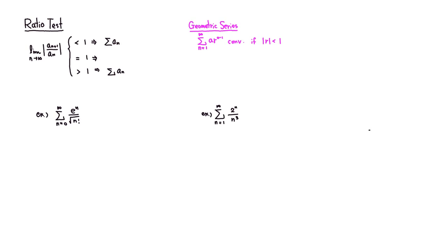Let's look at the ratio test. Remember that the geometric series is convergent when the absolute value of r is less than 1, and otherwise it's going to diverge. We're mimicking this idea. The r is the ratio between two consecutive terms of a geometric series. So what we're going to do is for the ratio test, we're going to use the similar idea.